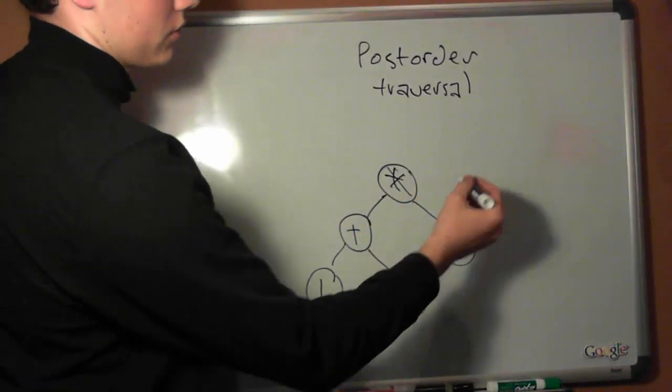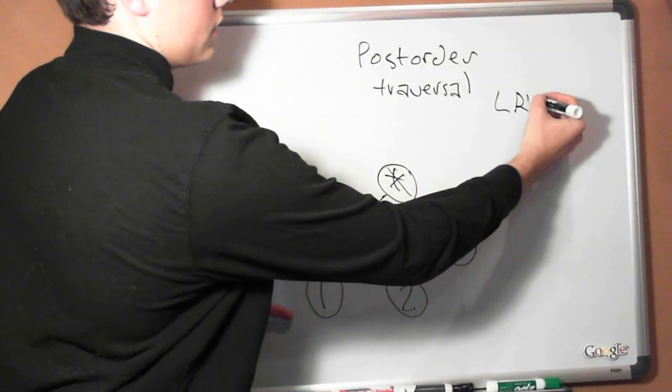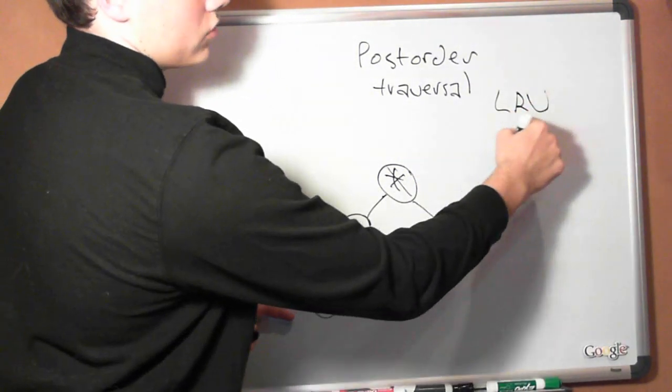So for postorder traversal we do left, right, and value.